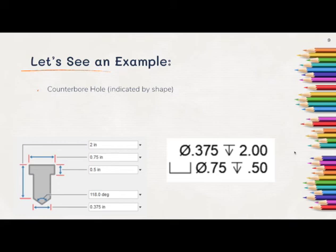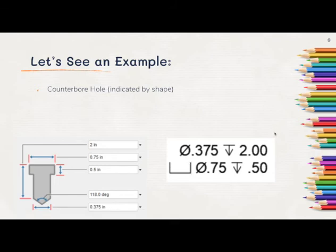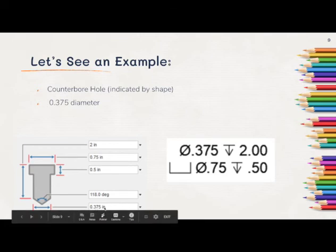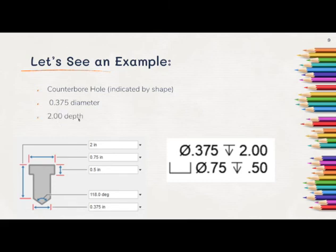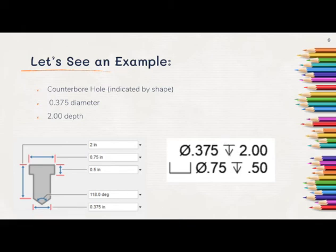First, we know it's a counterbore hole because of the shape that's indicated in the diagram. We also know, based upon this symbol right here in the hole note, we have a .375 diameter located at the bottom for the inner diameter of this hole. A counterbore hole has two different diameters, an inner diameter and an outer diameter. The overall depth of this hole is two inches. That's indicated in the hole note with this symbol indicating two inches of depth.